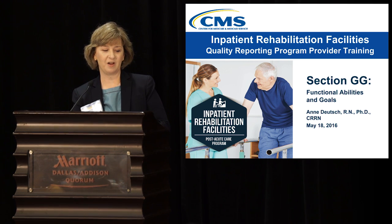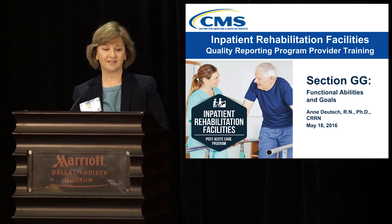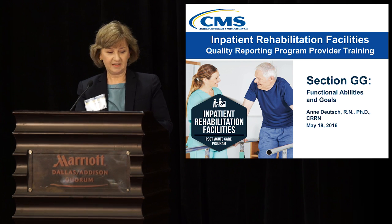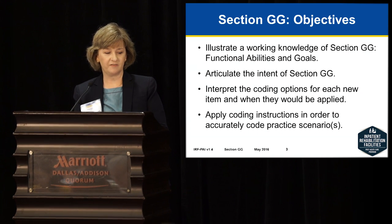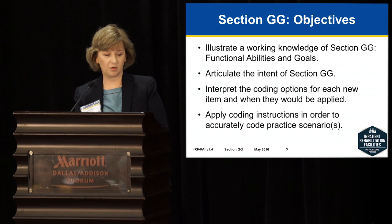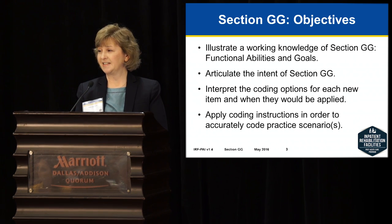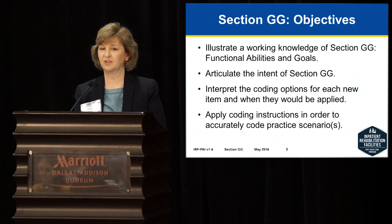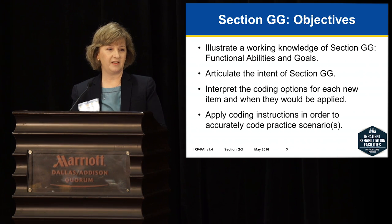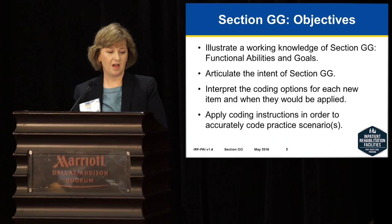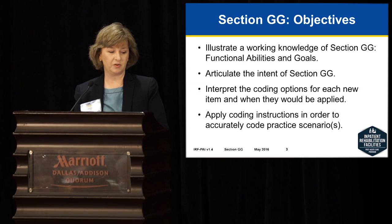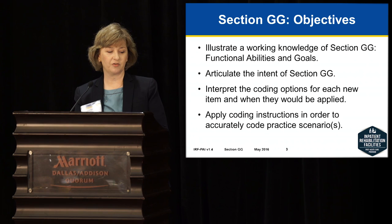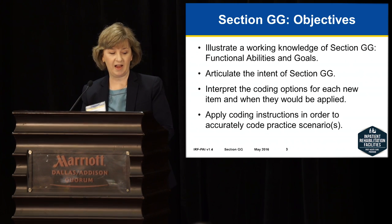This is the section about functional abilities and functional goals. The objectives for this section are to illustrate a working knowledge of Section GG functional abilities and goals. We want you to be able to articulate the intent of the items, and I know we've already gotten some questions as part of the preparation for this program. We want you to be able to interpret the coding options for each new item and accurately apply the coding instructions in order to come up with accurate scores.